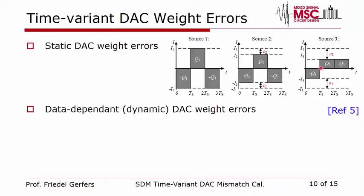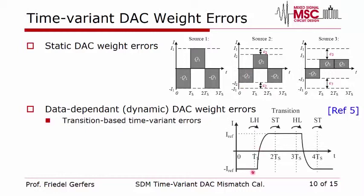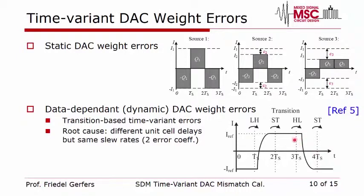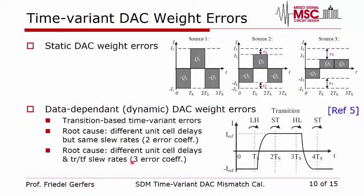However, besides static errors we also have dynamic errors. Looking at real DAC signal transitions, we see different delays and different slew rates. This means errors are data-dependent: a transition from minus one to one has a slope and a potential delay; no transition yields only a static error; a falling edge shows a different delay and potentially a different slew rate. Depending on the model, we end up with two or three coefficients per cell.